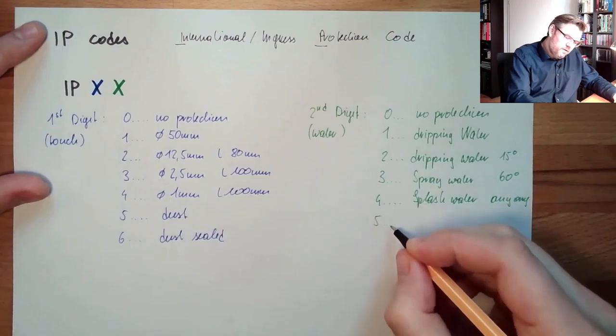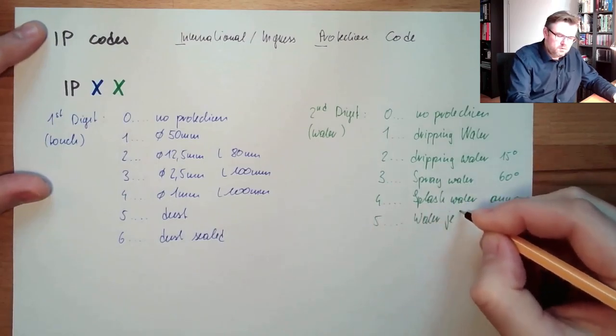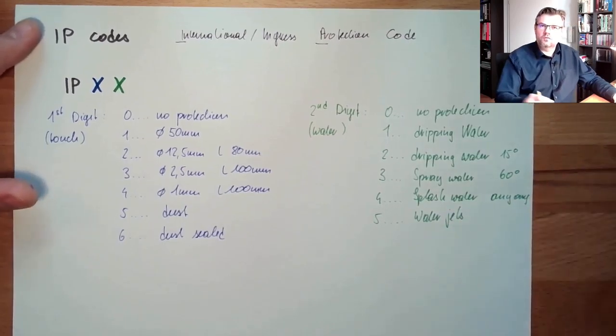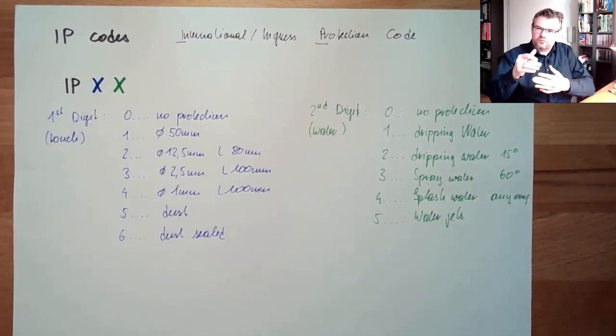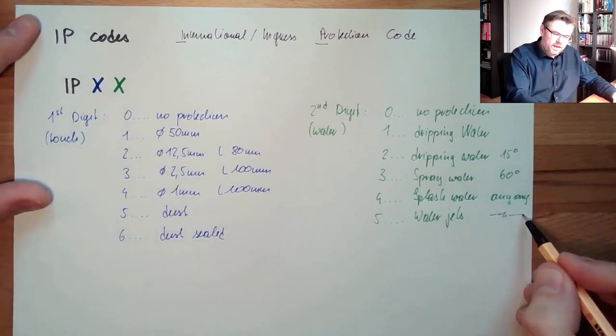Then there's 5. Water jets. The garden hose. Water jet, also any angle.